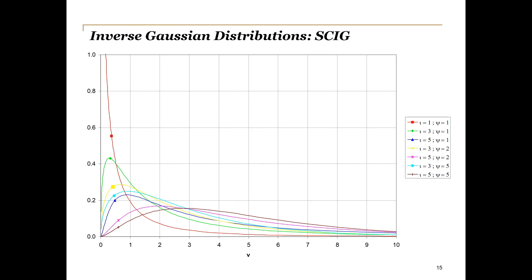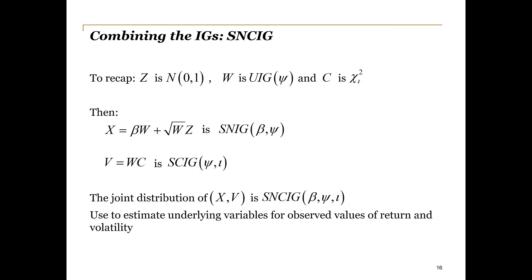Finally, we obtain our bivariate distribution by combining the two inverse Gaussian distributions. Just to pull everything together, recall that Z is standard normal, W is UIG and C is chi-squared distributed. Then we have seen that X is standard normal inverse Gaussian and V is standard chi-squared inverse Gaussian. Now the joint distribution of X and V is what we call the standard normal chi-squared inverse Gaussian distribution. And we require it to simultaneously estimate the model parameters for observed values of the share price return and volatility.